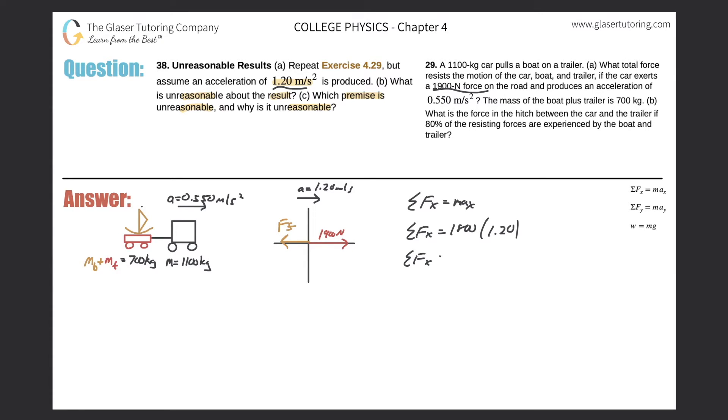So the sum of the force in the x direction will equal, so 1800 times 1.2, so it's 2160 newtons.